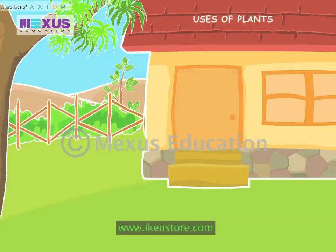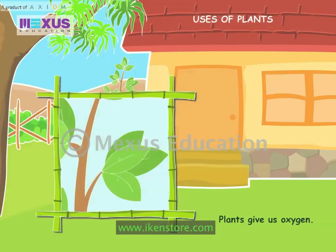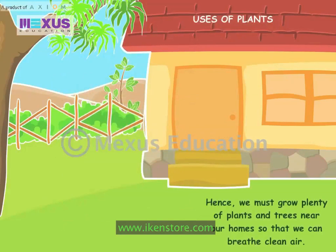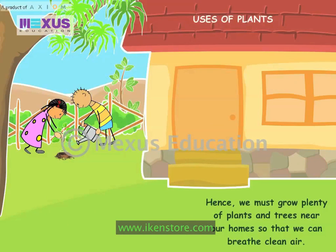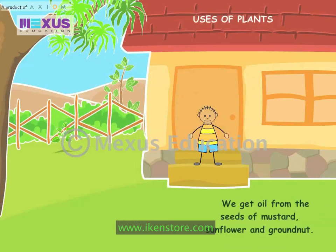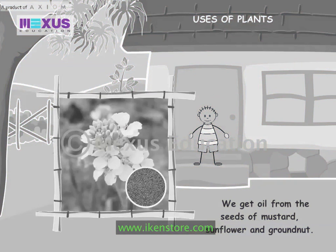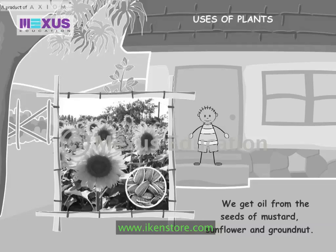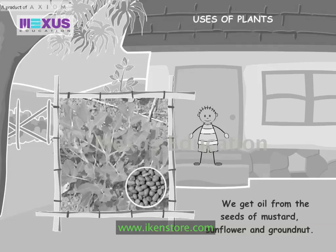Uses of Plants: Plants give us oxygen. Hence, we must grow plenty of plants and trees near our homes so that we can breathe clean air. We get oil from the seeds of mustard, sunflower and groundnut.